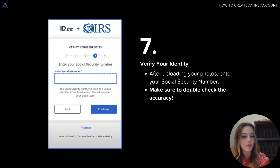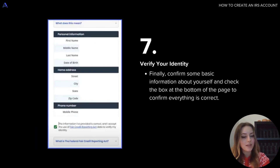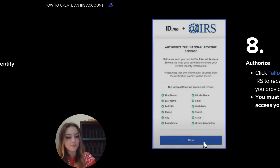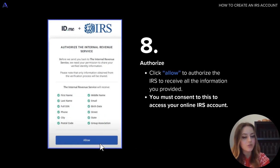So once you've got that entered, hit the blue continue button to move on to the final part. The last part in this verifying your identity stage is just confirming some basic information and details about yourself. Check the box at the bottom to confirm everything is correct. After verifying your identity, you'll just need to authorize that the IRS may receive all of the information that you just uploaded.